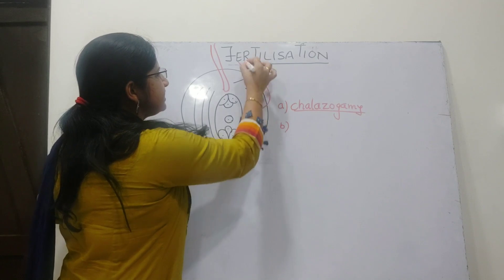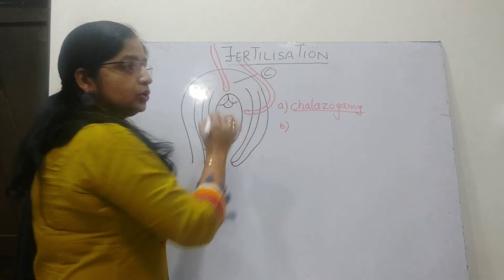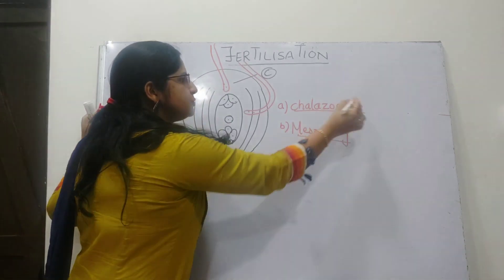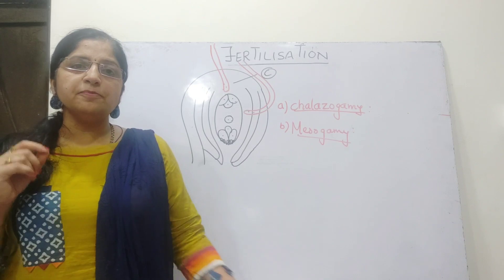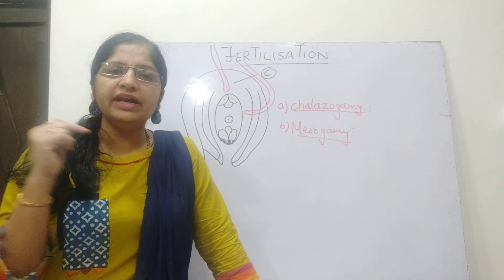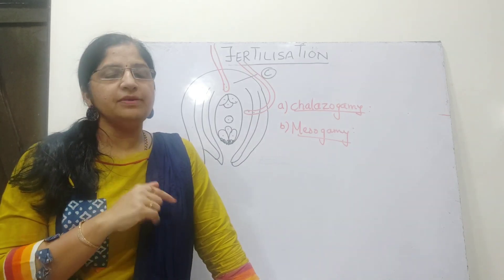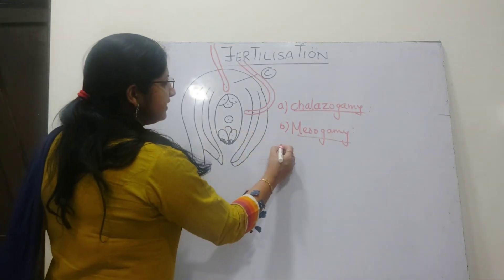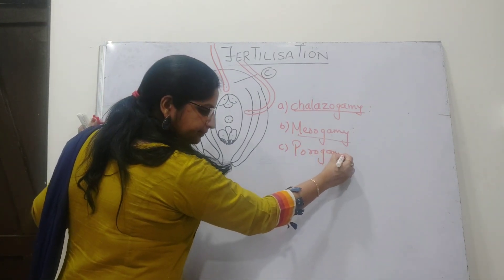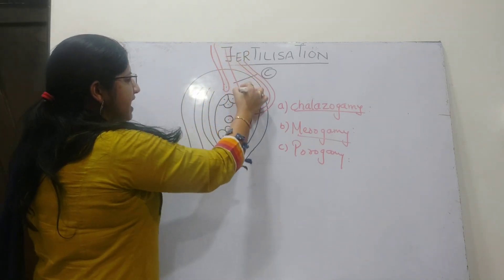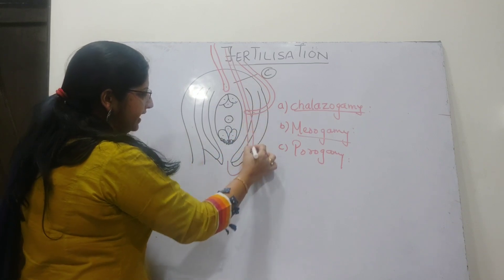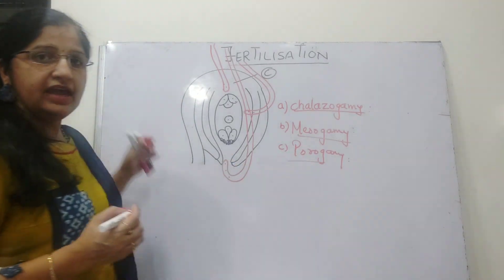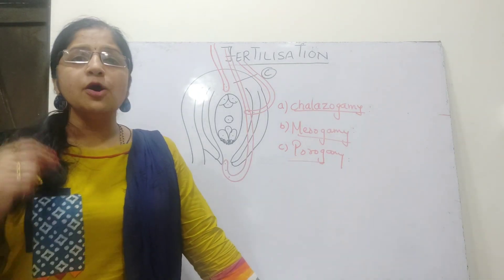If the pollen tube passes through the integuments and the male gametes are released to approach the female embryo sac, then this process is called mesogamy. Mesogamy is where the pollen tube pierces through the integuments of the ovule in order to approach the female embryo sac. This is also not a very common way. The most common way is called porogamy, where the pollen tube passes through and enters through the micropylar end. This process is called porogamy.